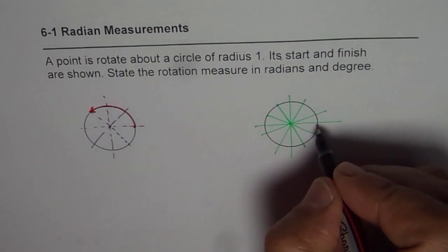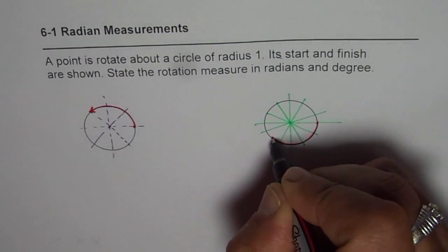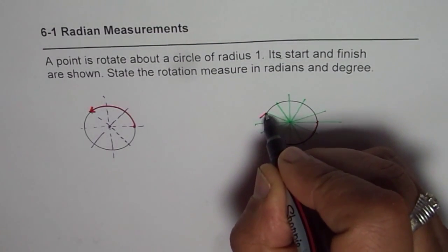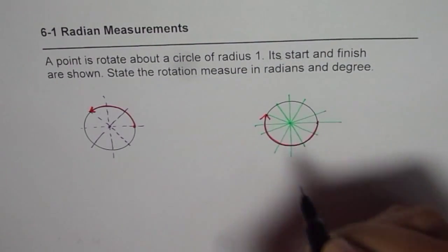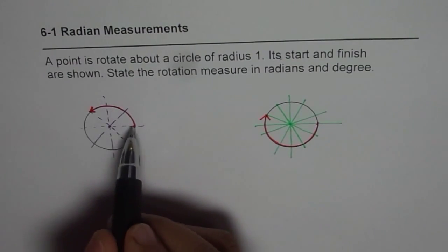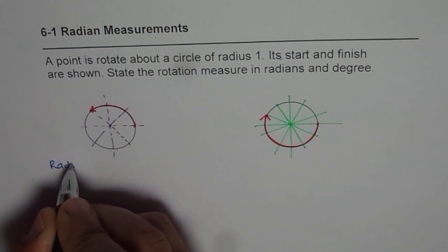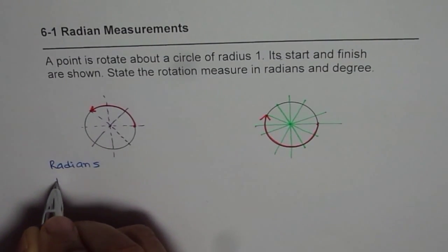So in this particular case, I would like to tell you or ask you, what should be the measure of this angle? So you have to write the measurement in both radians and in degrees. So let's find out, what is the measurement of this angle in radians and in degrees?